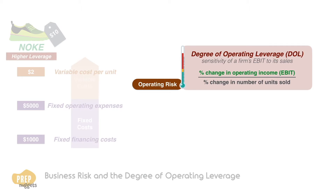For example, a ratio of 3.0 means that for every 1% change in number of units sold, the operating income changes by 3%. So if the number of units increases by 5%, the operating income should increase by 15%.